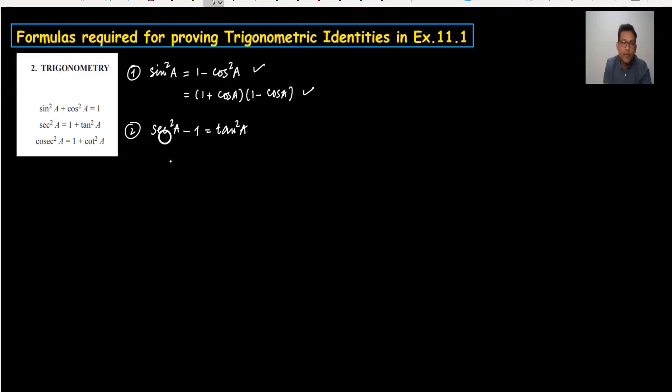Now tan²a equals (sec a + 1)(sec a - 1). This is factor form. So now we have two more identities like sec²a - 1 is also equal to tan²a.